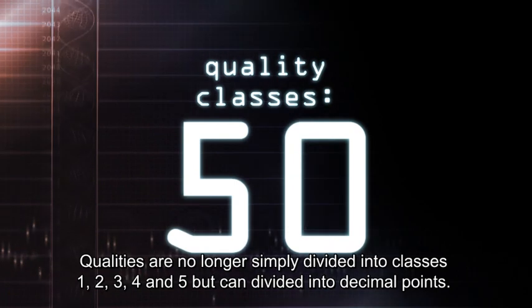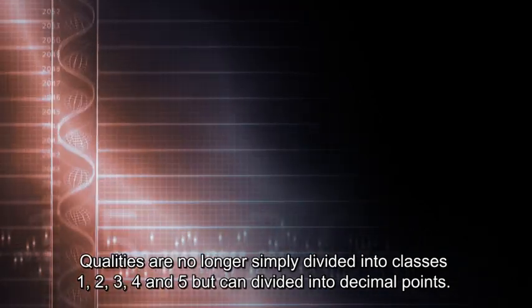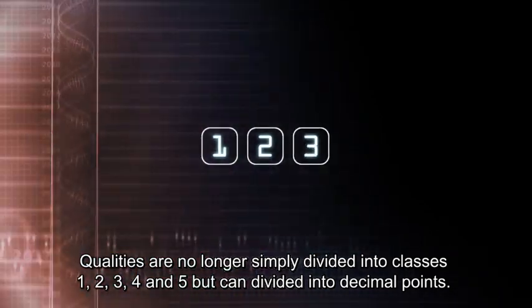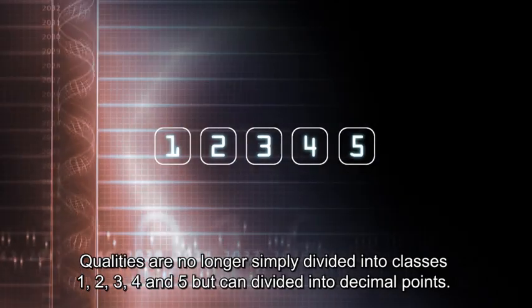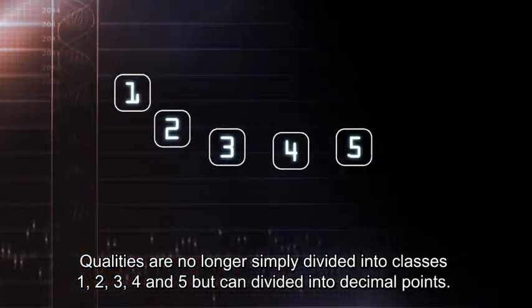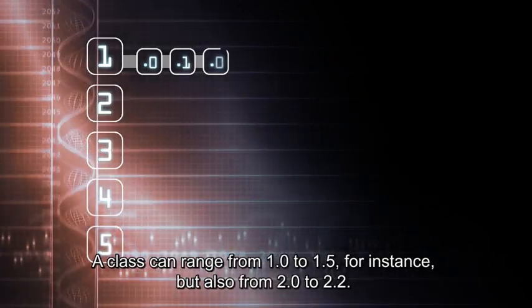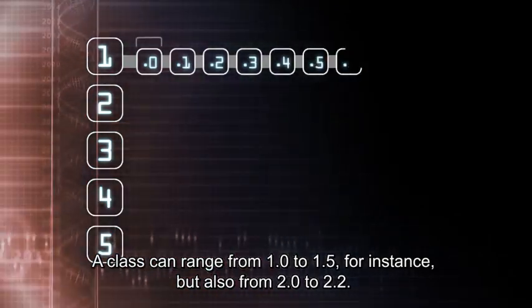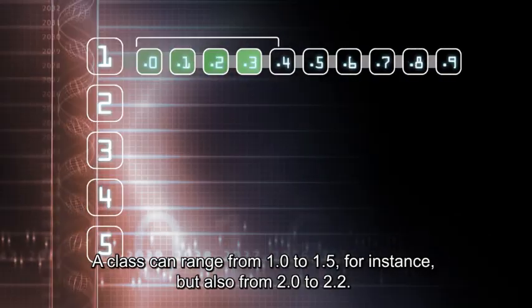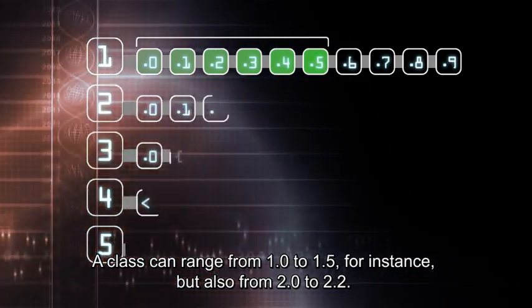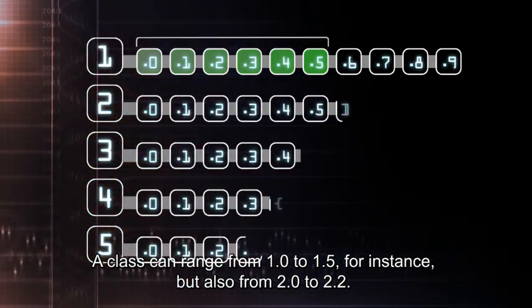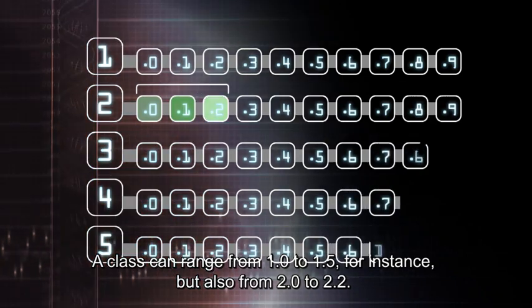Qualities are no longer simply divided into classes 1, 2, 3, 4, and 5, but can be divided into decimal points. A class can range from 1.0 to 1.5, for instance, but also from 2.0 to 2.2.